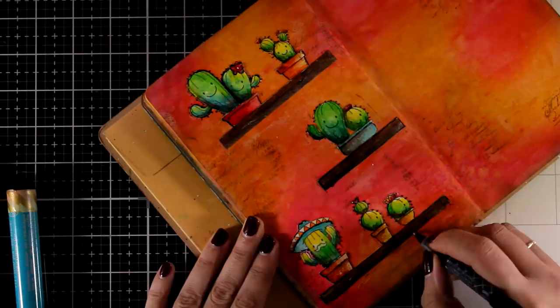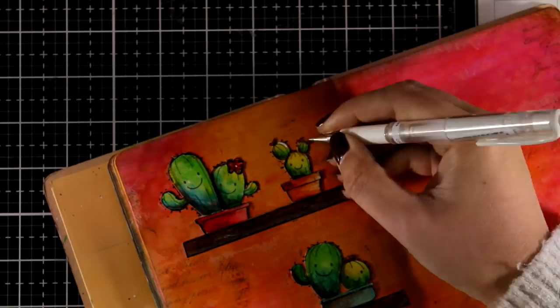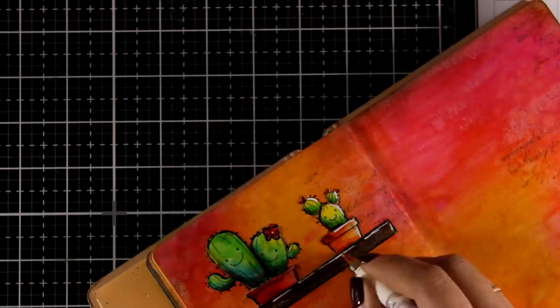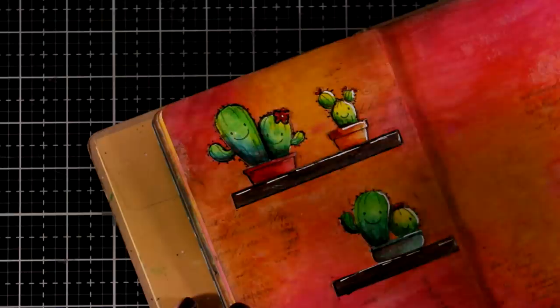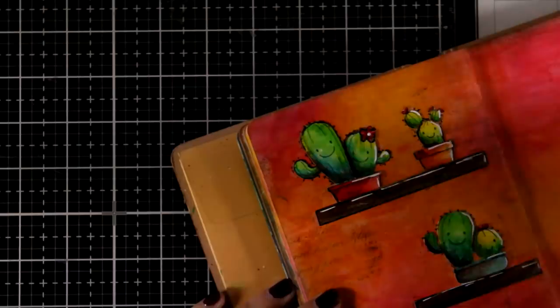And now another fun detail is adding highlights with my white gel pen. I'm not paying too much attention on where the source of light is and such. I just like to have a sketchy and a cartoonish looking design. So I'm adding white lines here and there, which helps the images pop even more against the background. I just love the look.